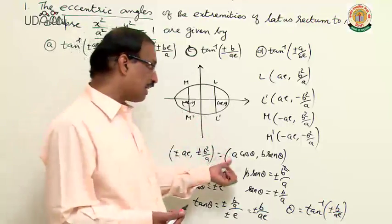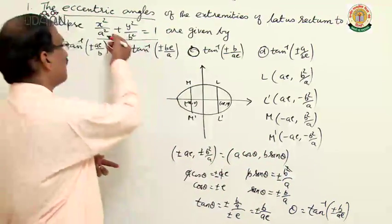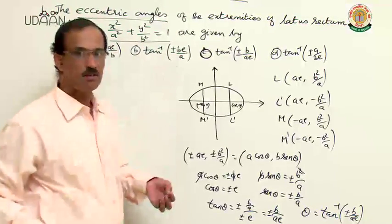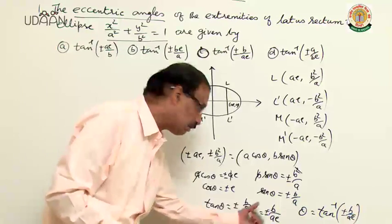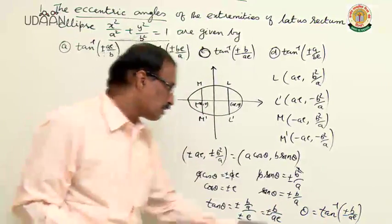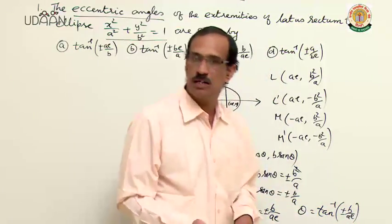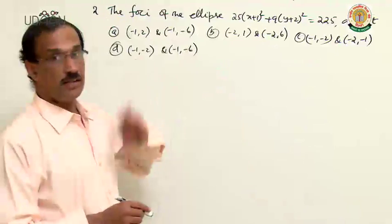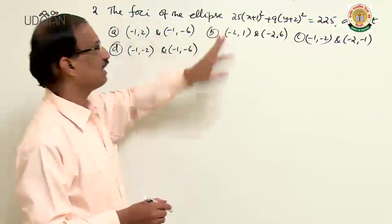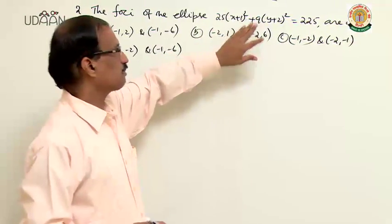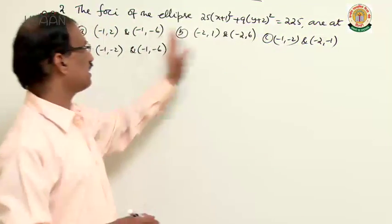Any point on the ellipse in parametric form is (a cosθ, b sinθ). Comparing with the latus rectum coordinates, we get tan θ = ±b/ae, so θ = tan⁻¹(±b/ae). Now the next question: find the foci of the ellipse 25(x+1)² + 9(y+2)² = 225.